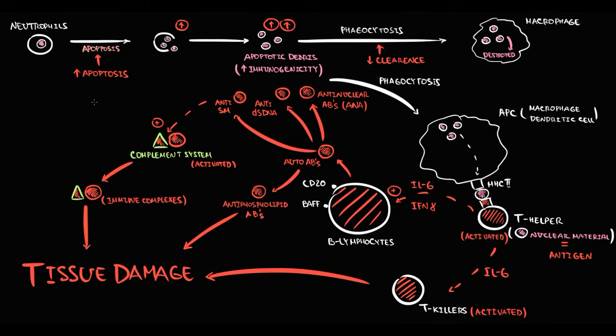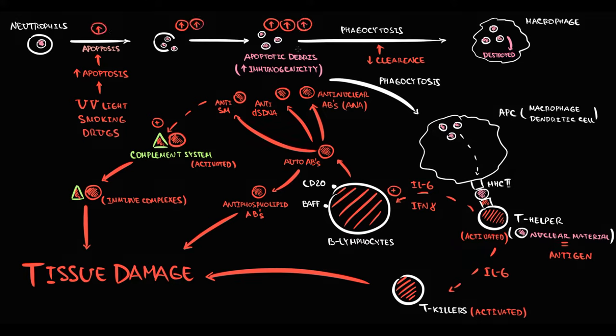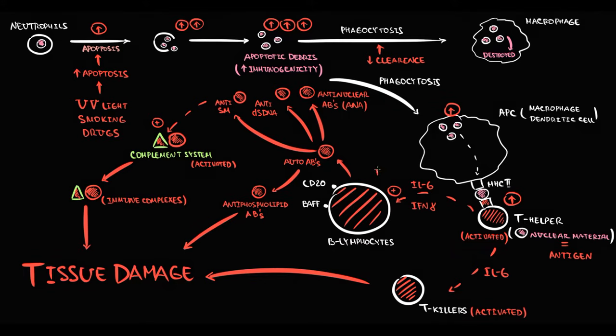Initially the disease is in a silent phase, but certain factors can trigger lupus. Most commonly these are ultraviolet light, smoking, and drugs — all of which can increase the rate of apoptosis and thereby the production of apoptotic debris. The higher the amount of apoptotic debris, the higher the chance that macrophages present fragmented nuclear material to T-helpers, triggering their activation. This stimulates B lymphocytes and T lymphocytes, resulting in massive tissue damage. The three major pathogenic factors are autoantibodies, immune complexes, and T-killers.